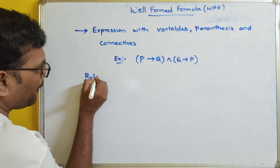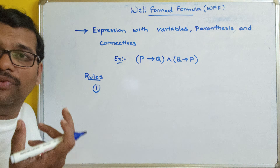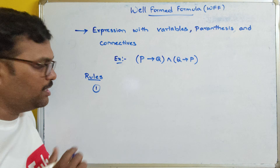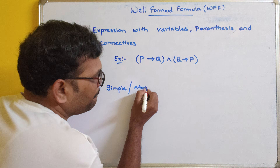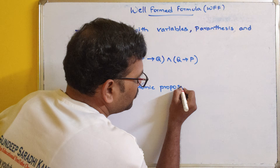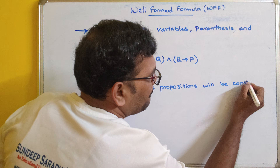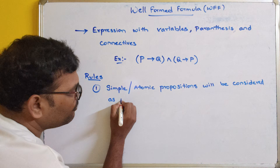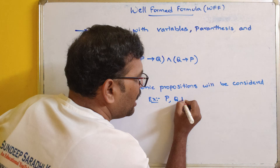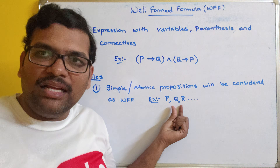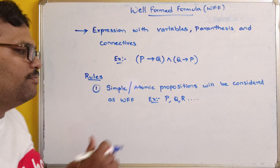Now, what are the rules to determine whether a given formula is a well-formed formula? The first rule is that a standalone variable itself can be treated as a well-formed formula. Simple or atomic propositions will be considered as a well-formed formula. For example, P, Q, R, and so on — these letters we usually represent for simple propositions, and those simple propositions will be considered as a well-formed formula.